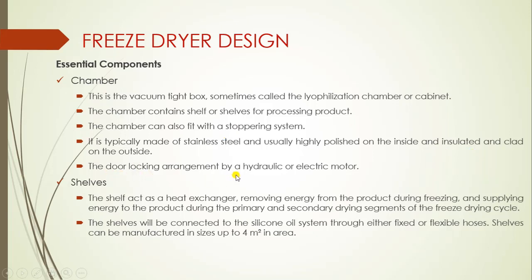The door locking arrangement is by hydraulic or electric motor. Another component is cells. Cells act as a heat exchanger — they remove energy from the product during freezing and supply energy to the product during primary drying and secondary drying. Cells are connected to the silicon oil system through either fixed or flexible hoses. Cells can be manufactured in sizes up to 4 square meters in area. The basic function of the cell is to hold the product for processing and to transfer energy during freezing and drying.